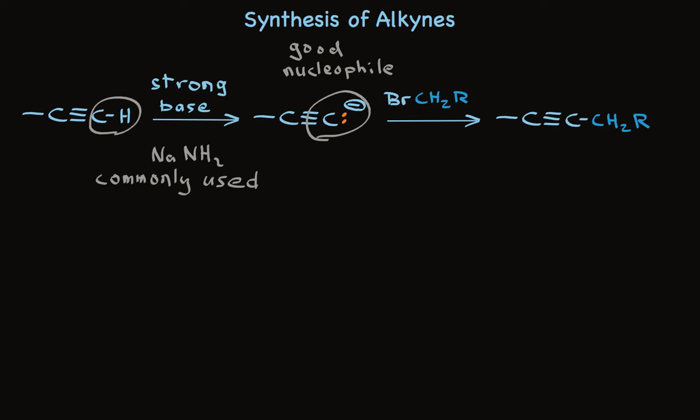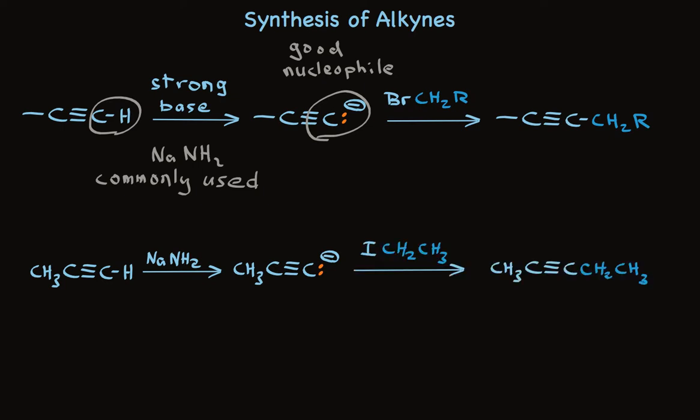So, again, to show a specific example, we could treat the alkyne I've got here on the left with sodium amide to make the acetylide, and subsequent reaction with ethyl iodide makes an alkyne. We have a methyl group attached to one carbon, and an ethyl group that we just attached on the other carbon.